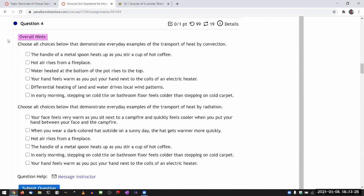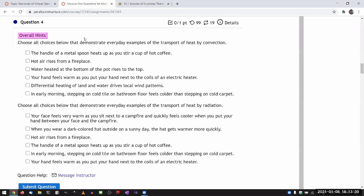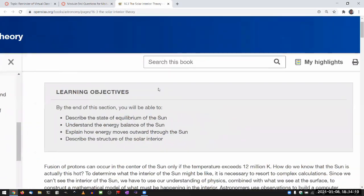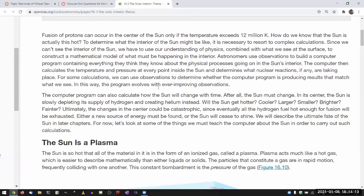The first part is asking choose all choices that demonstrate everyday examples of transport of heat by convection. That's the key word. The main important thing is to understand the mechanisms of heat transfer. That's something we would probably spend more time on in a physics or chemistry class. In this class, we will focus mostly on the mechanisms that are relevant in the context of astronomy. In this particular situation, it happens to be convection and radiation.